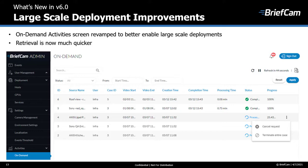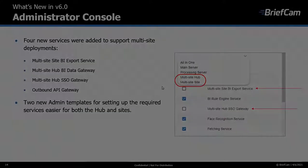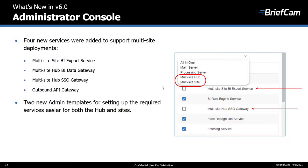Additional changes include the newest request always appearing first, and filters and sorting being maintained. On-demand activities are now retrieved at a much quicker rate, improving support for large data sets. In the administrator console, four new services were added to support multi-site deployments, along with two new templates to help set up the required services for both the hub and the sites.